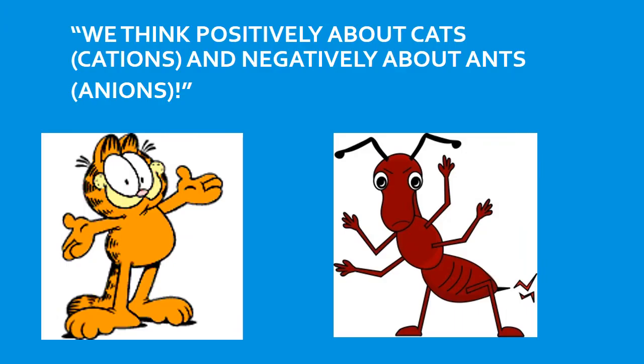Here's an easy way to remember: think positively about cats (cations) and negatively about ants (anions).